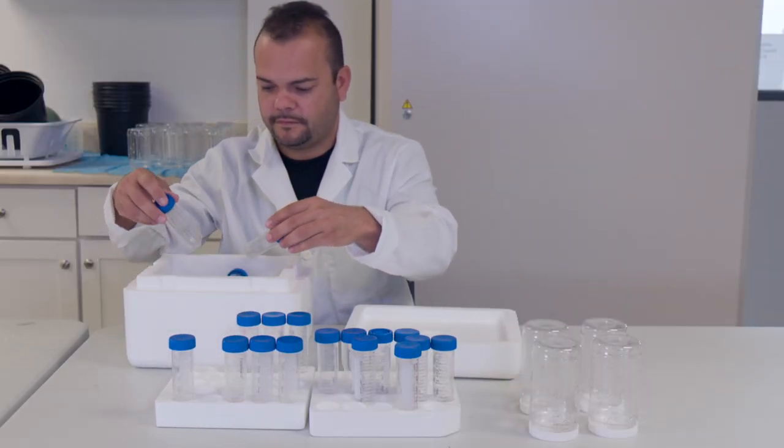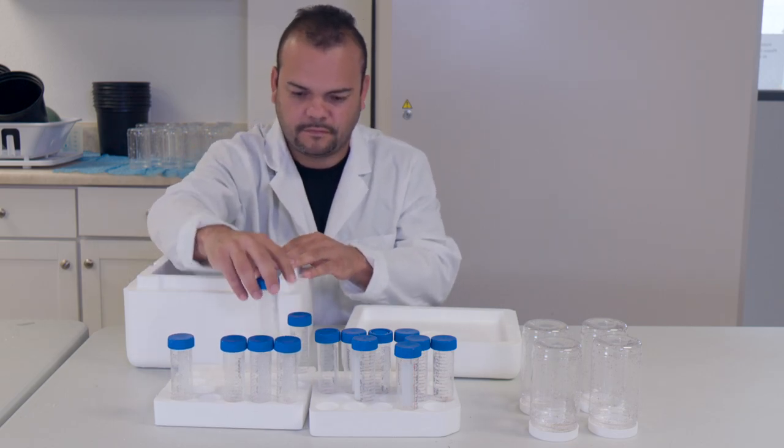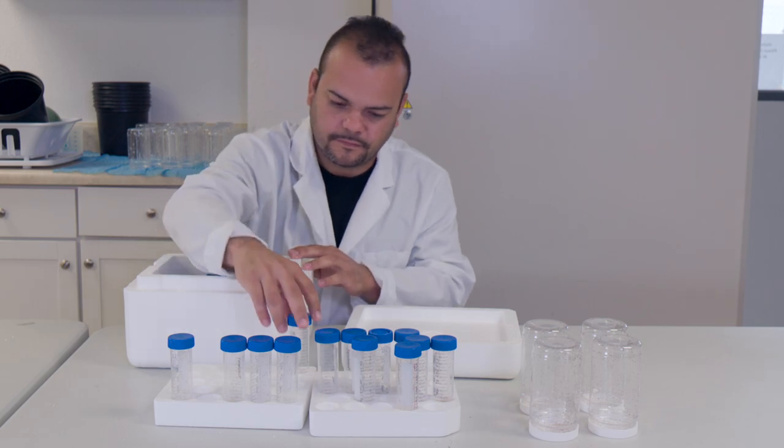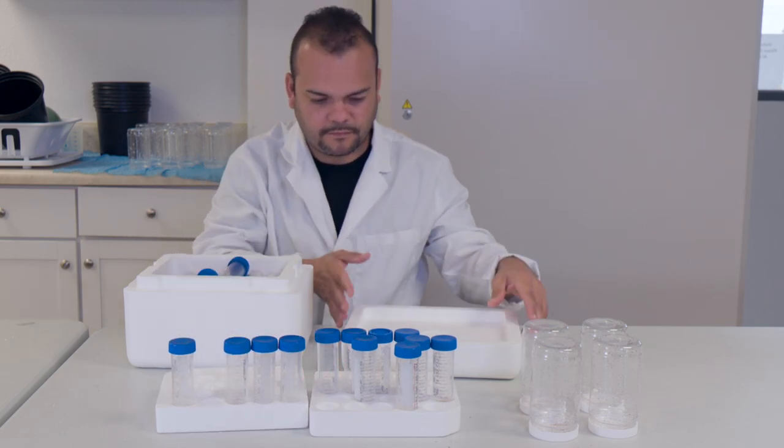Tamarixia are placed in a shipping vial containing a honey-soaked paper towel as a temporary food source, to be sent to the field for release, while adult psyllids are sorted out into separate vials to be reused in subsequent rearing cycles.